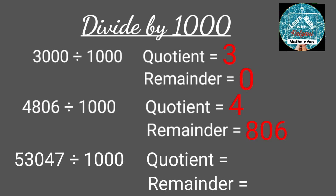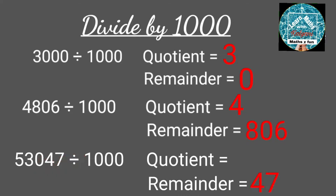When 53,047 is divided by 1000, the remainder is 047, that means 47, and the quotient is 53.